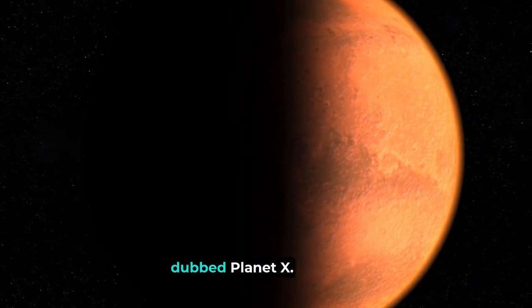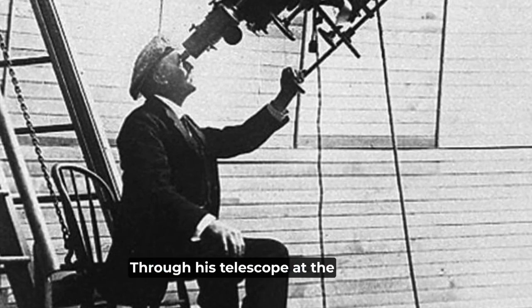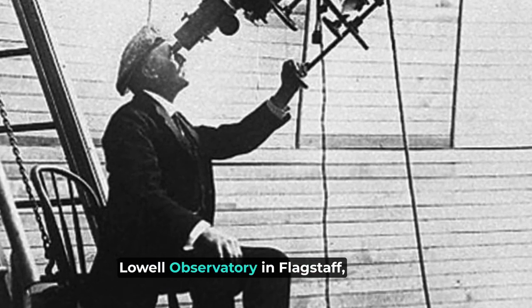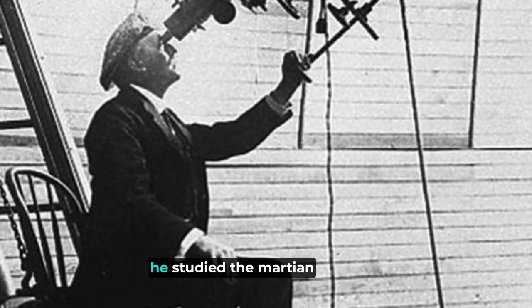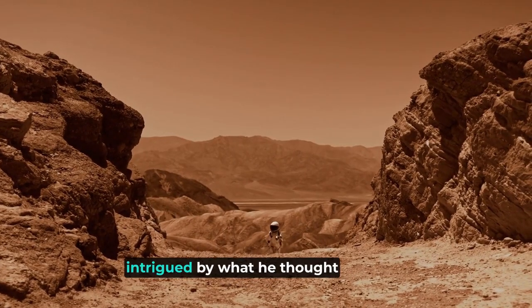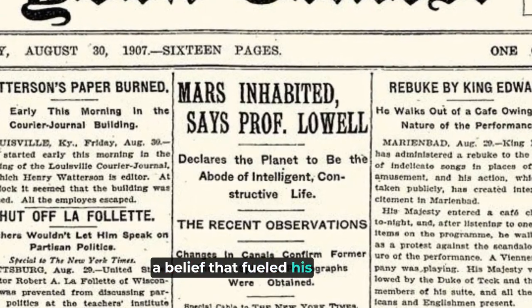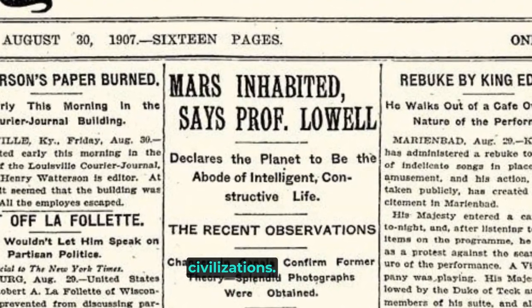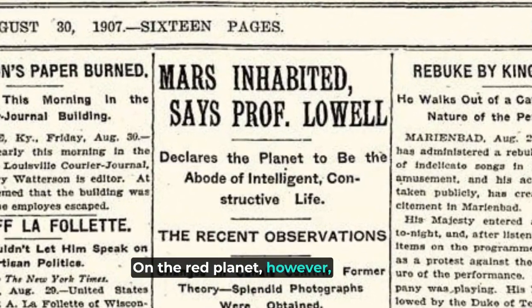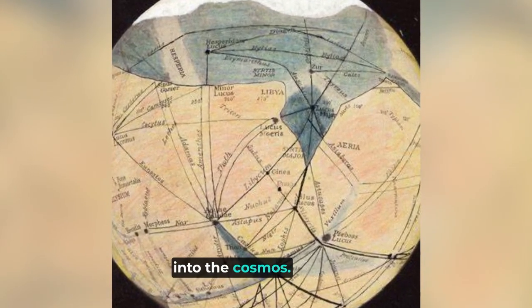Lowell's journey began with his deep interest in Mars. Through his telescope at the Lowell Observatory in Flagstaff, Arizona, he studied the Martian surface intensely. Lowell was particularly intrigued by what he thought were canals on Mars, a belief that fueled his speculation about advanced civilizations on the red planet. However, it was not Martian life but rather Martian anomalies that led him deeper into the cosmos.